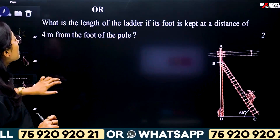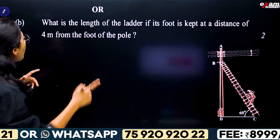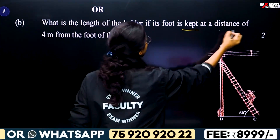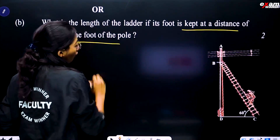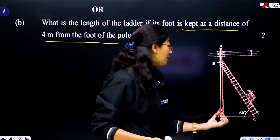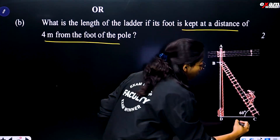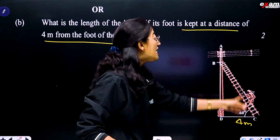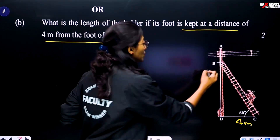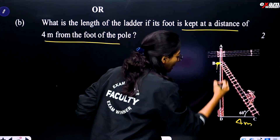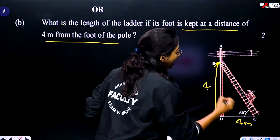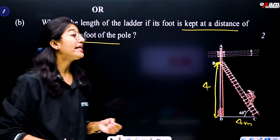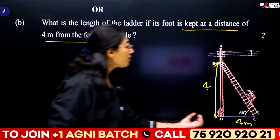The question asks: what is the length of the ladder if its foot is kept at a distance of 4 meters from the foot of the pole? So we have the ladder with its foot 4 meters away from the base of the pole, and we need to find the length of the ladder.